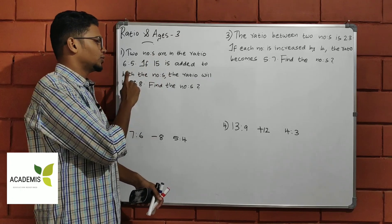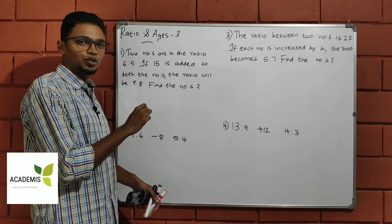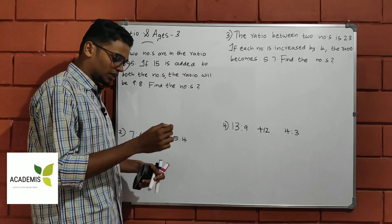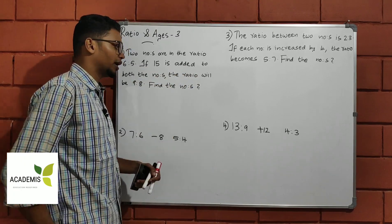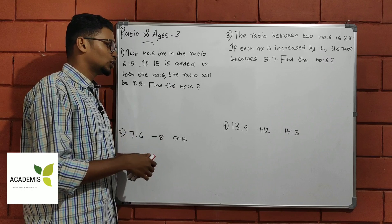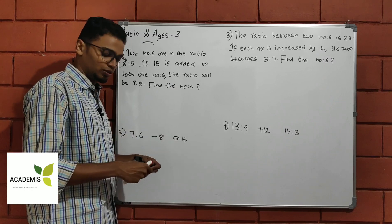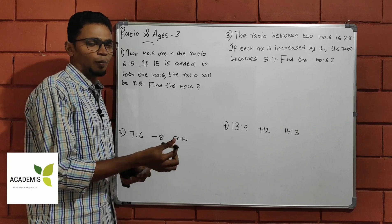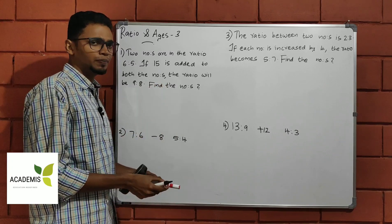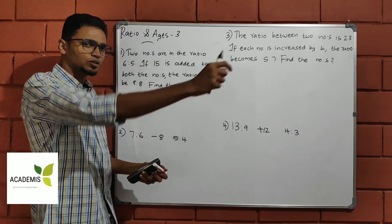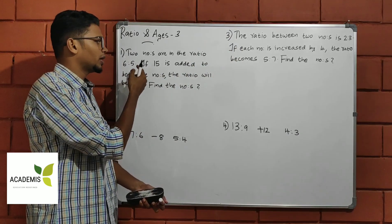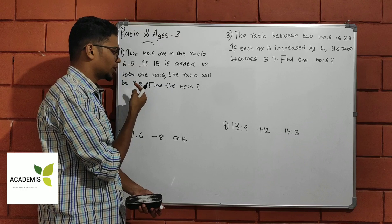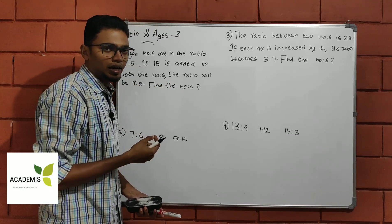The two numbers are in a ratio. If 15 is added to both numbers, the ratio will become 9 to 8. Find the numbers.